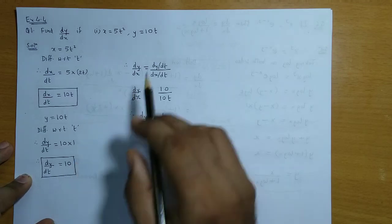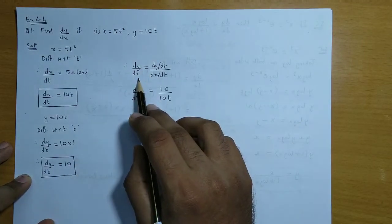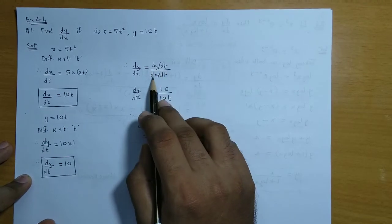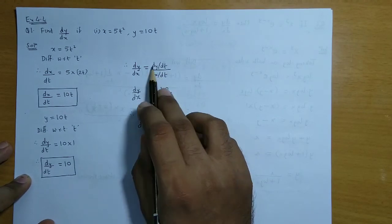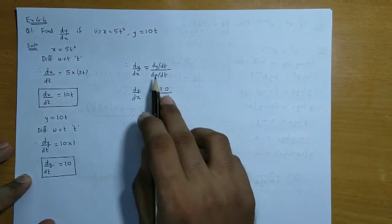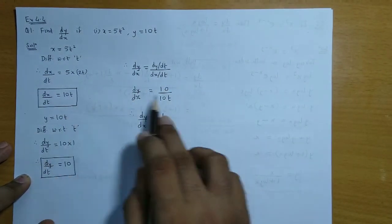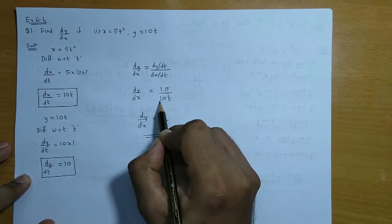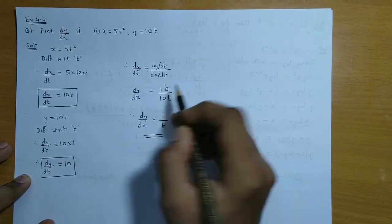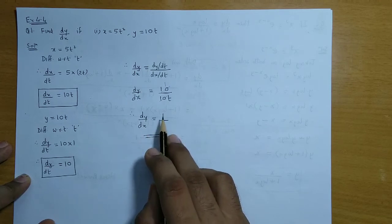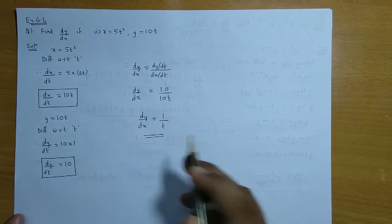Finally, dy/dx is obtained as dy/dt divided by dx/dt. Here dy/dt is equal to 10 and dx/dt is equal to 10t. So 10 and 10 cancel out, and we get dy/dx = 1/t.